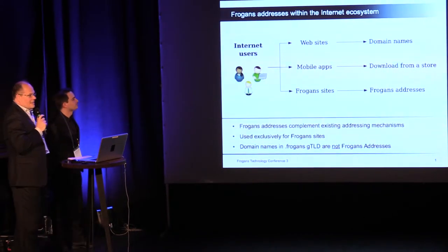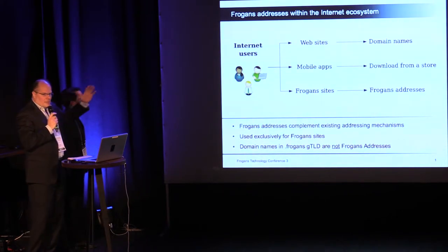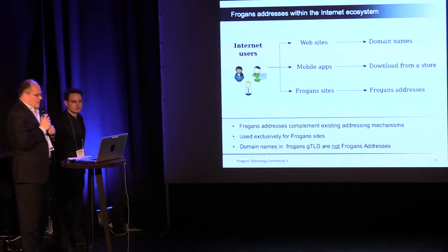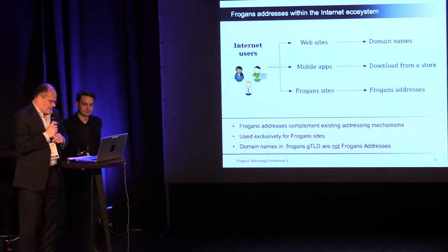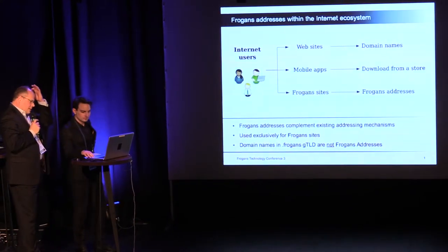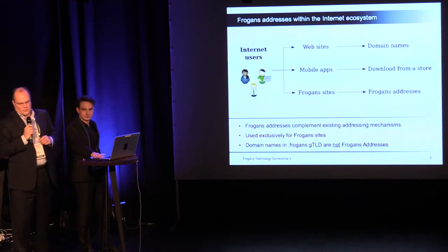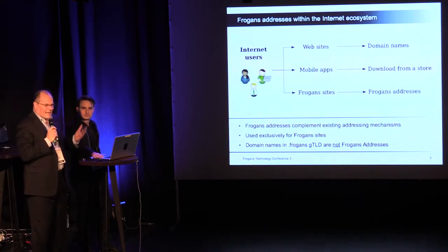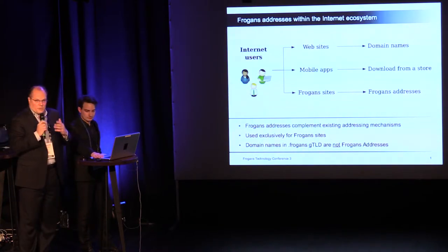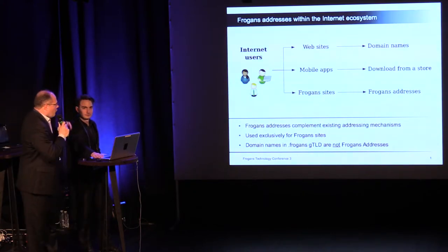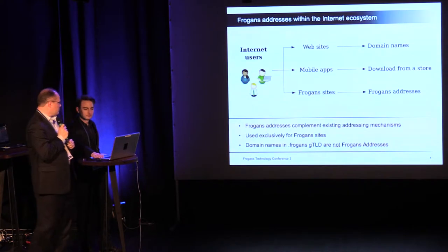What are today the various options or alternatives to publish on the internet? We have websites, mobile apps, and then we'll be adding a new class — Frago's sites — to publish content. These sites are accessible with a new addressing system called Frago's addresses. Frago's sites should not be seen as a replacement of existing tools, but as an add-on. Their characteristics make them particularly useful in certain contexts, but not for all cases. We see Frago's addresses as an additional means of accessing content on the internet.